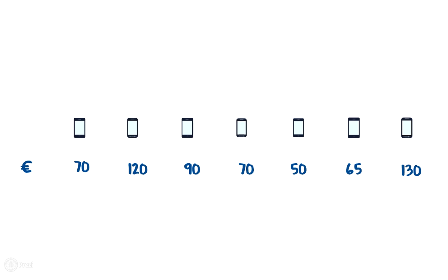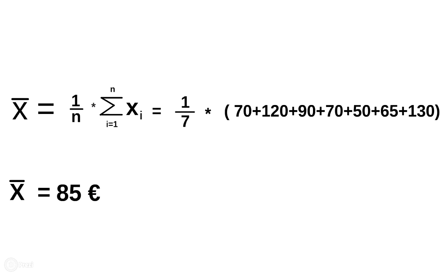Furthermore, we know that we have to sum up the individual prices xi. Our last step is to insert the numbers into the formula. We receive x̄ equals one divided by seven times the sum of the individual prices: 70 plus 120 plus 90 plus 70 plus 50 plus 65 plus 130. The solution is 85 euros — the average price for the used smartphones amounts to 85 euros.